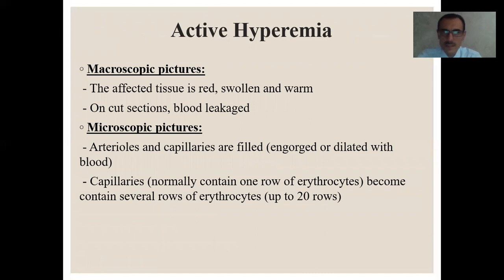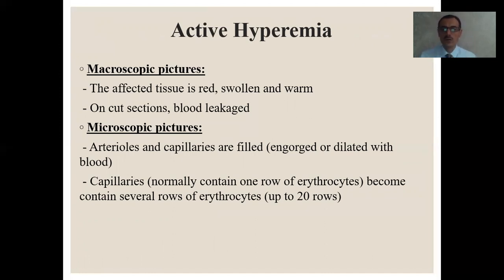The macroscopic picture of active hyperemia: the affected tissue is red, swollen, and warm. On cut sections, blood leakage is observed. Microscopically, the arterioles and capillaries are filled and dilated with blood. The capillaries, which normally contain one row of erythrocytes, become filled with several rows — up to 20 rows of erythrocytes.